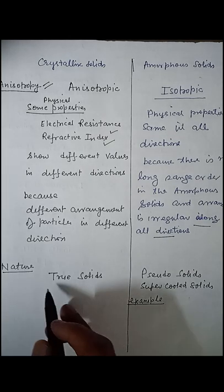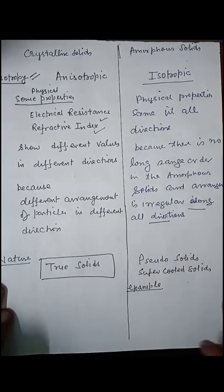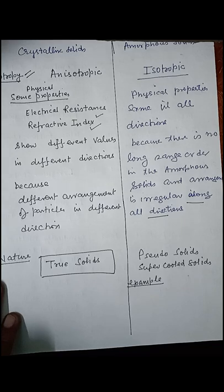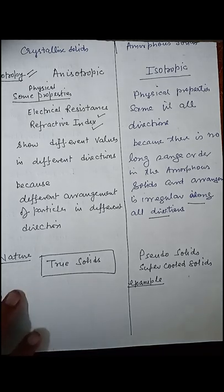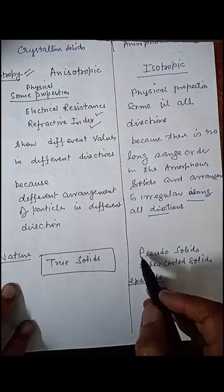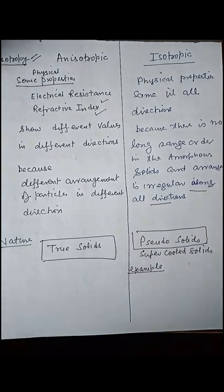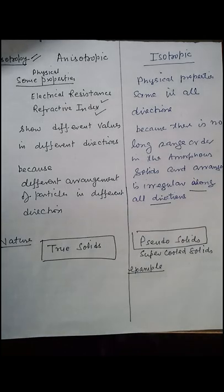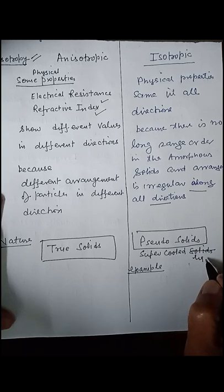Regarding nature, crystalline solids are true solids — they have a sharp regular shape, sharp melting point, and sharp heat of fusion. But in the case of amorphous solids, they are pseudo solids, meaning they don't have any sharp melting point or sharp heat of fusion, and they don't have any ordered arrangement of constituent particles. So they are pseudo solids and super cooled liquids.